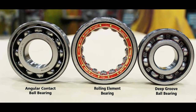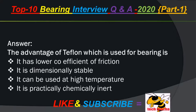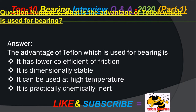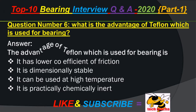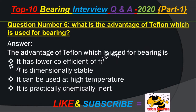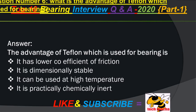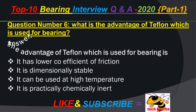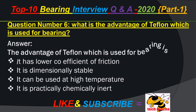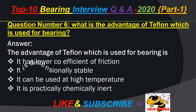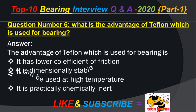Roller bearing is generally used on high speed with heavy load. Question number 6: What is the advantage of Teflon which is used for bearings? Answer: The advantages of Teflon used for bearings are: it has a lower coefficient of friction, it is dimensionally stable, it can be used at high temperature, and it is practically chemically inert.